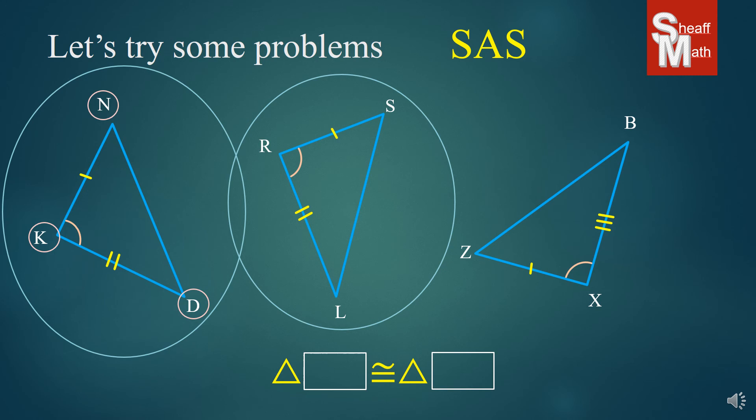And so, on my second one, I am going to start with L, and then move it to the angle, R, and then out to S. And so, L, R, S is the congruent order.